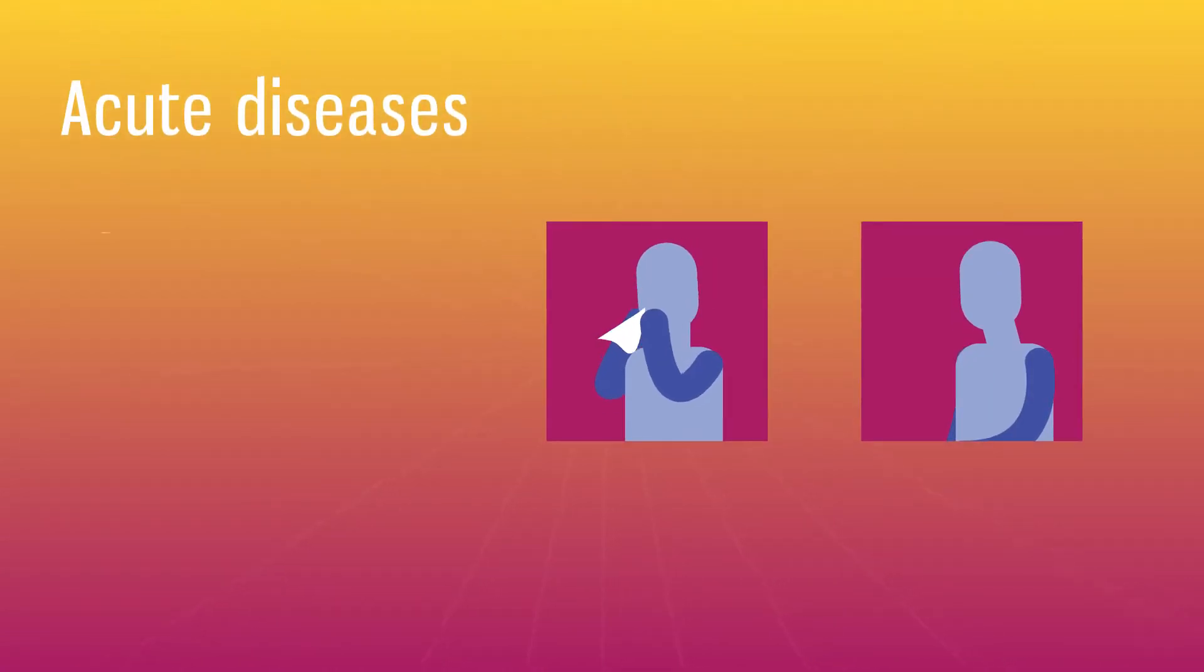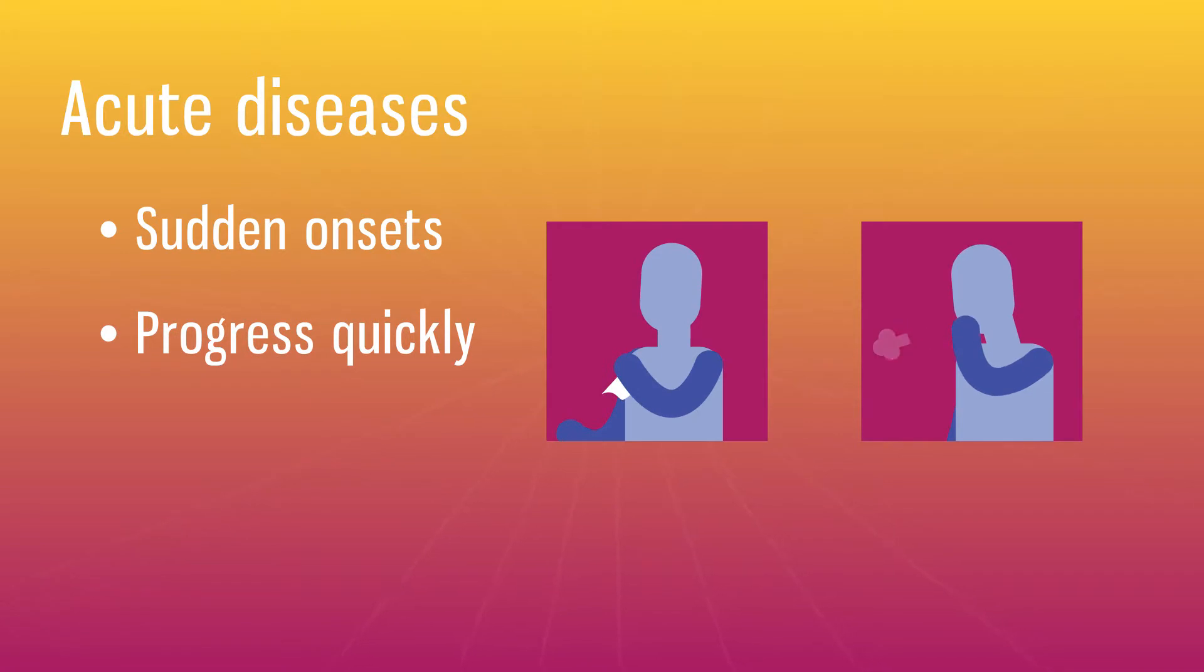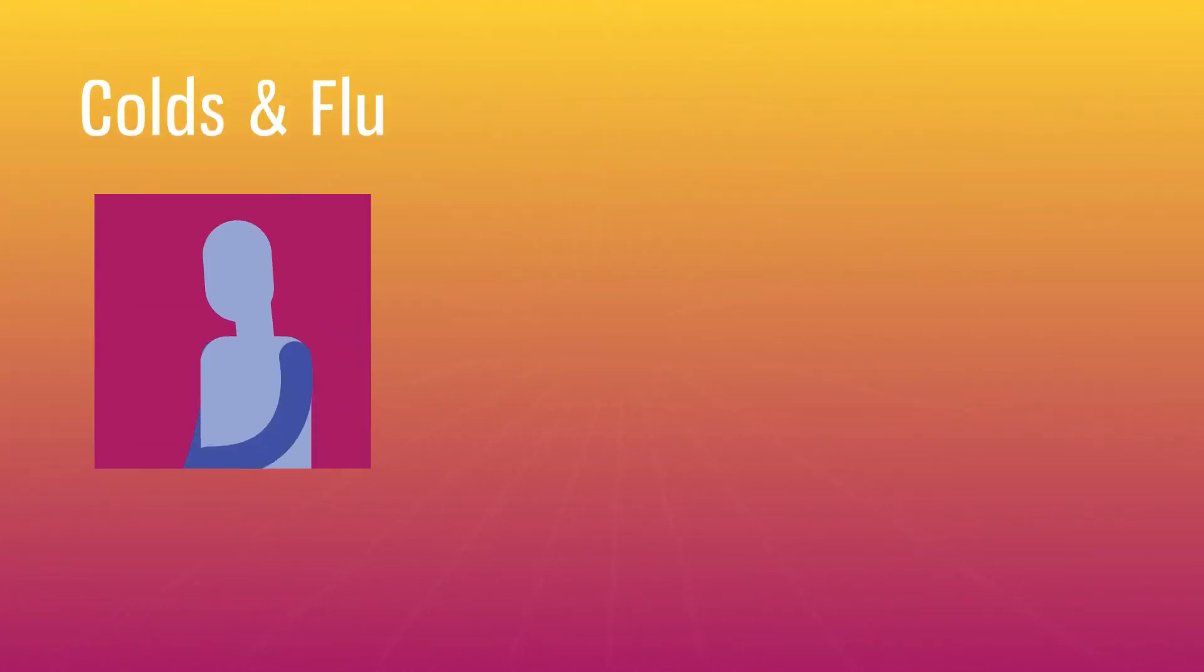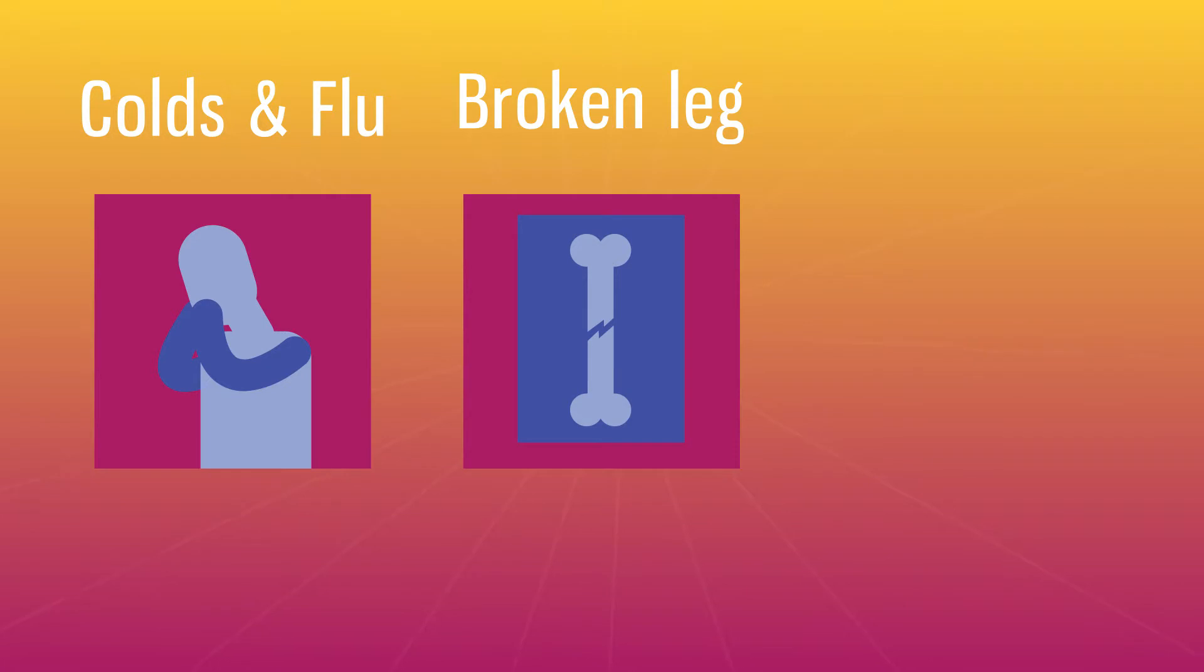Acute diseases have sudden onsets and progress quickly. Treatments include taking drugs and or surgery. Examples of acute diseases are colds, flu, a broken leg, or a liver disease.